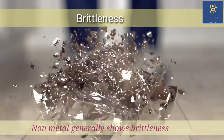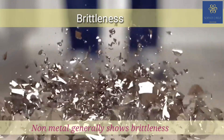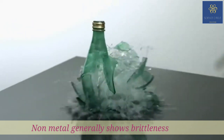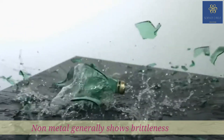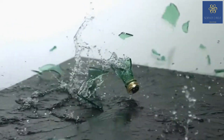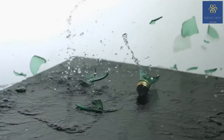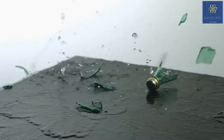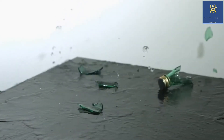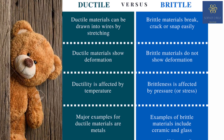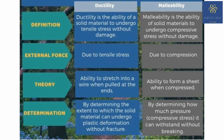In contrast, brittleness is the property which allows a material to break without forming a stretch under tensile stress, as we see in glass. If you try to pull glass it won't stretch or take the shape of a wire — it will break. Concrete is another example. Here is a chart showing the difference between ductility and malleability.